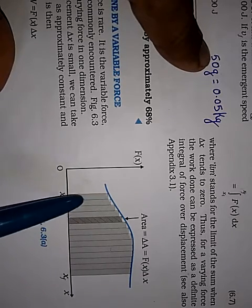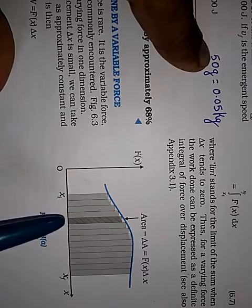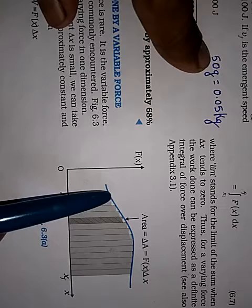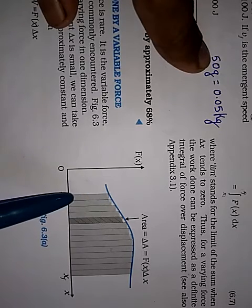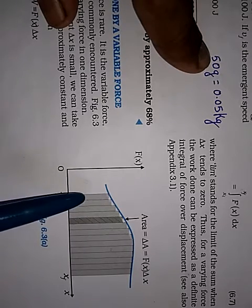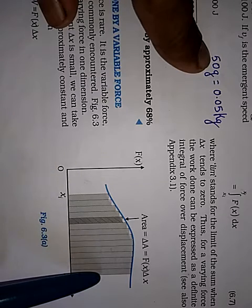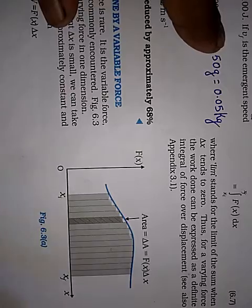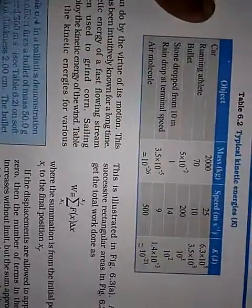So this rectangular area you first point out. For example, this is del x into this is f1. So you will get work done. So this is w1, w2, w3. So you add throughout. So this addition is we represent by summation. So that is what is told here.